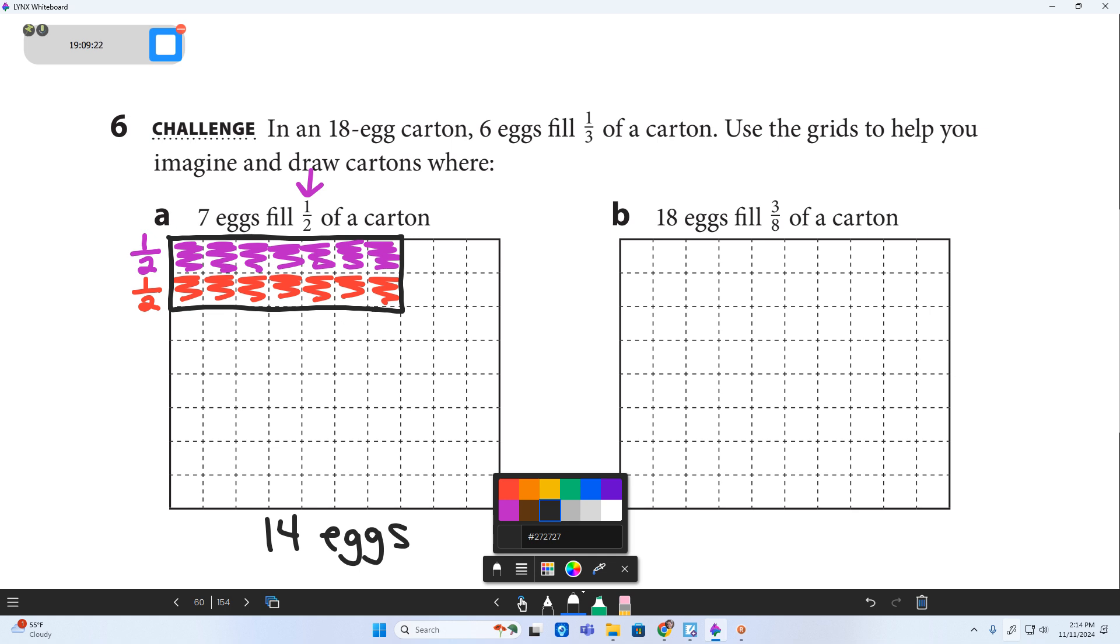Alright. Letter B says 18 eggs fill three eighths. This one's a little bit harder. I want to show 18 and I'm going to kind of split it into three groups. So I'm going to show like six eggs here. Okay. So there's six eggs and that's one eighth of the carton. Another six eggs is two eighths of the carton. Another six eggs is three eighths of the carton.